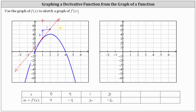Let's also sketch the tangent line at x equals two. Notice this is the vertex of the parabola, and therefore the tangent line is a horizontal line. All horizontal lines have a slope of zero. So when x is equal to two, the derivative function value, or slope of the tangent line, is zero. Now we will sketch these five points, which will be on the graph of f prime of x, and then we'll sketch f prime of x.